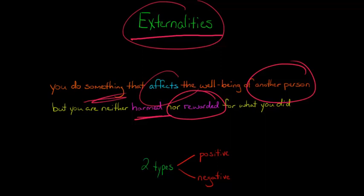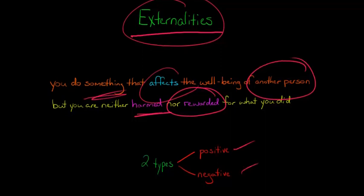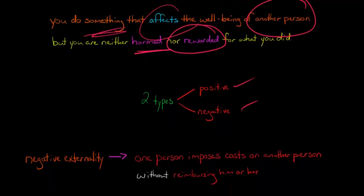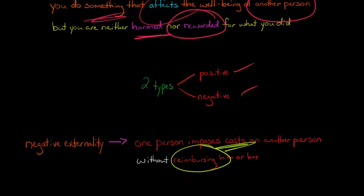So externalities can be positive, they can be negative. A negative externality is when you've harmed someone. You've done something to somehow impose a cost on someone or some company, and you haven't reimbursed that person, you haven't paid them any money or done anything to compensate for what you did.